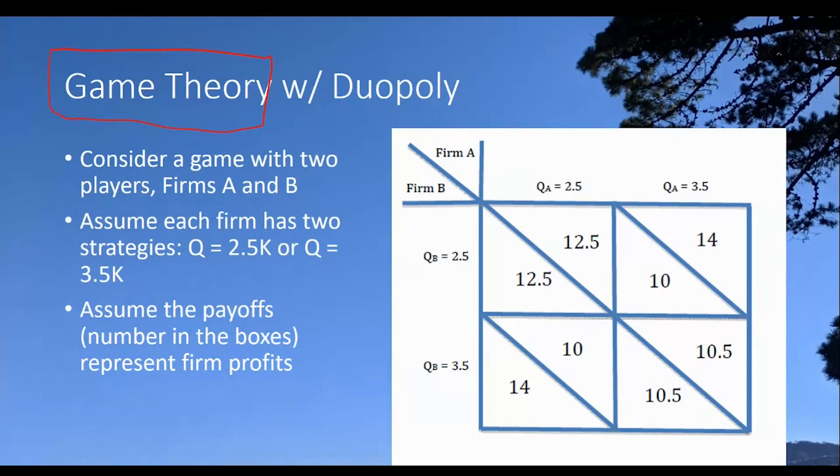So game theory is setting up an interaction between individuals and describing it or depicting it much like you would describe a game. It could be a card game, a board game, whatever. We're referring to those particular types of games. But now we're going to tell the story more in terms of a game, so to speak, that's being played by the brother and the sister in this particular market situation.